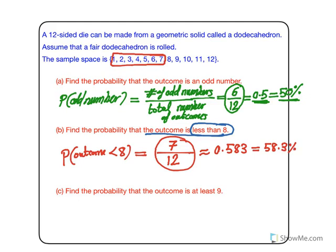For the last one, find the probability that the outcome is at least 9. This means we want the probability that our outcome is at least 9.